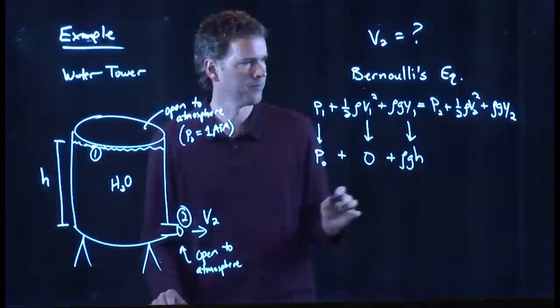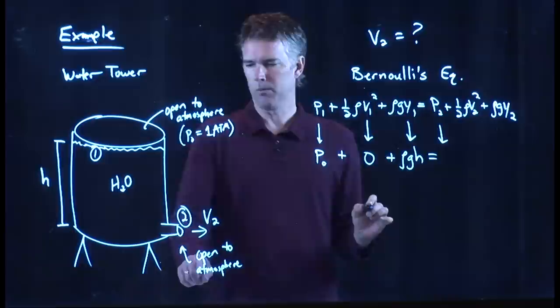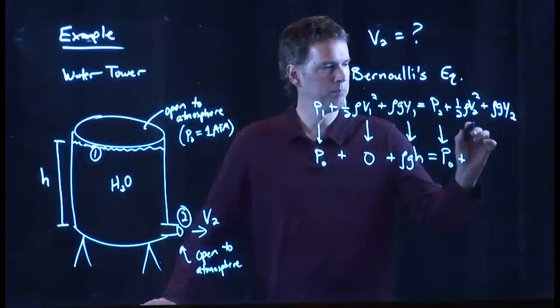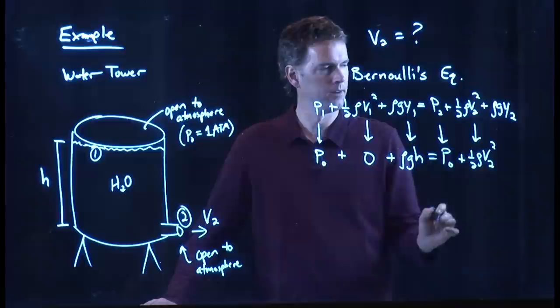What about the other side? We said the pipe is also open to the atmosphere, and so that is also a pressure of P0. It has speed V2, which is what we're interested in, and then we are at height zero.